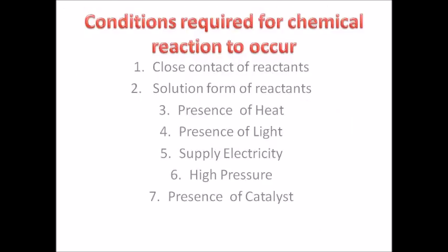Certain conditions are required for a chemical reaction to occur. The first condition is close contact — the two substances which are reacting with each other should be in close contact. For example, lead nitrate and potassium iodide should be in contact with each other to form new compounds: potassium nitrate and lead iodide.